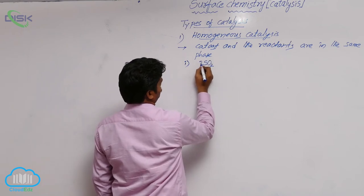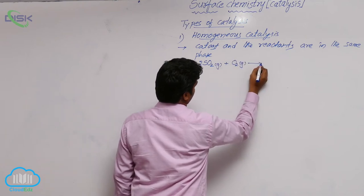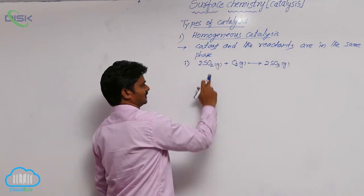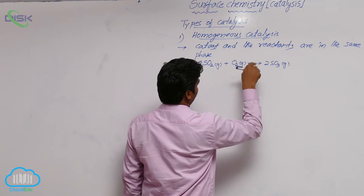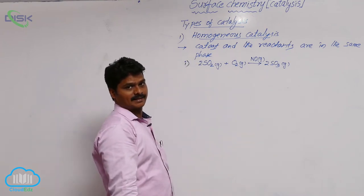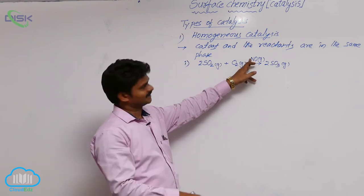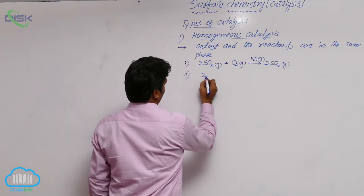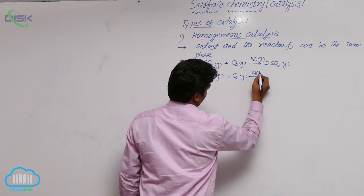First one: sulfur dioxide gas plus O2 gas gives rise to two SO3 gas. In this reaction, the reactants both are in gaseous state. The catalyst used is also in gaseous state. Here NO gas is used as catalyst, so reactants and catalyst all are in the same phase. That's why it is an example for homogeneous catalysis.